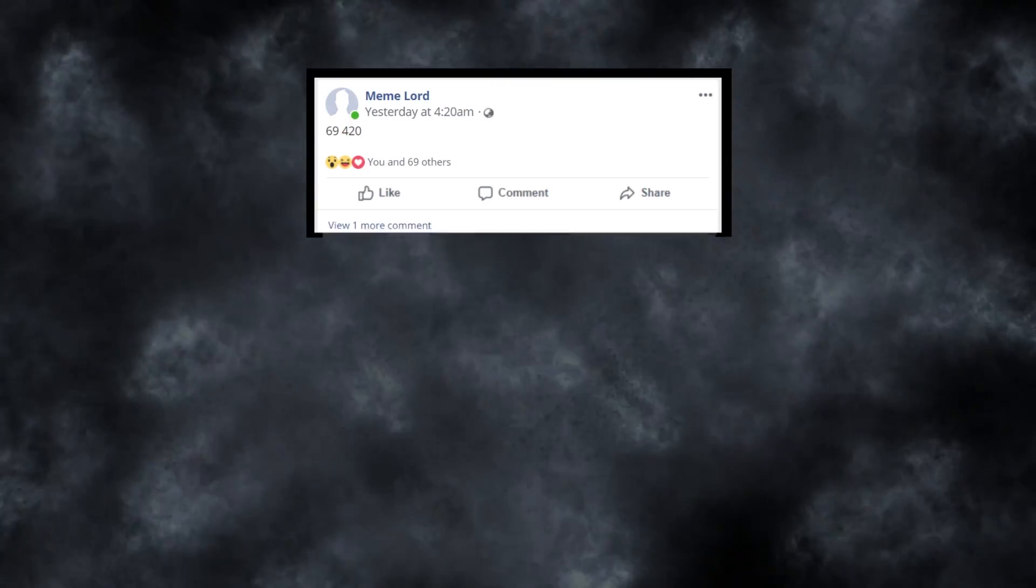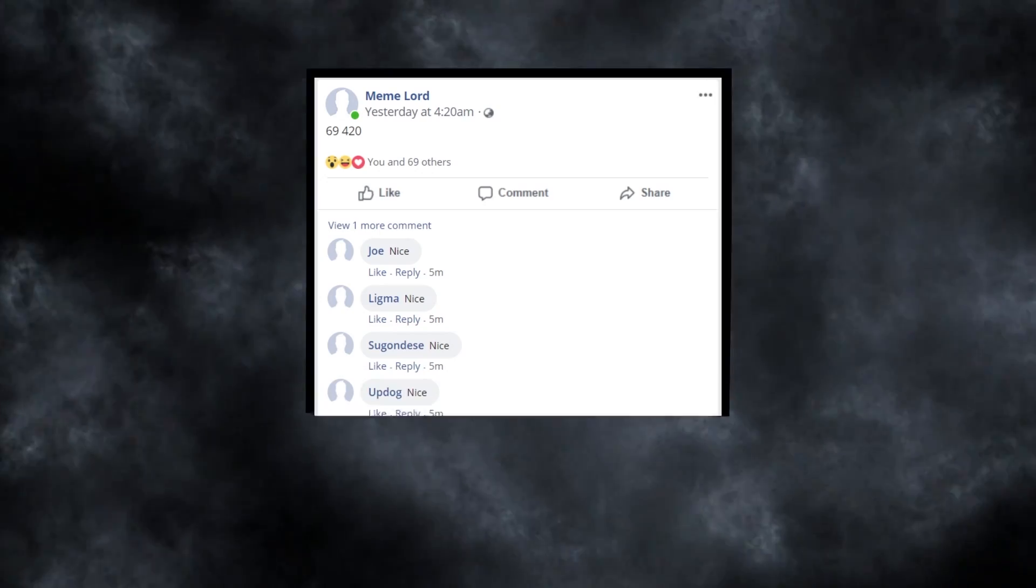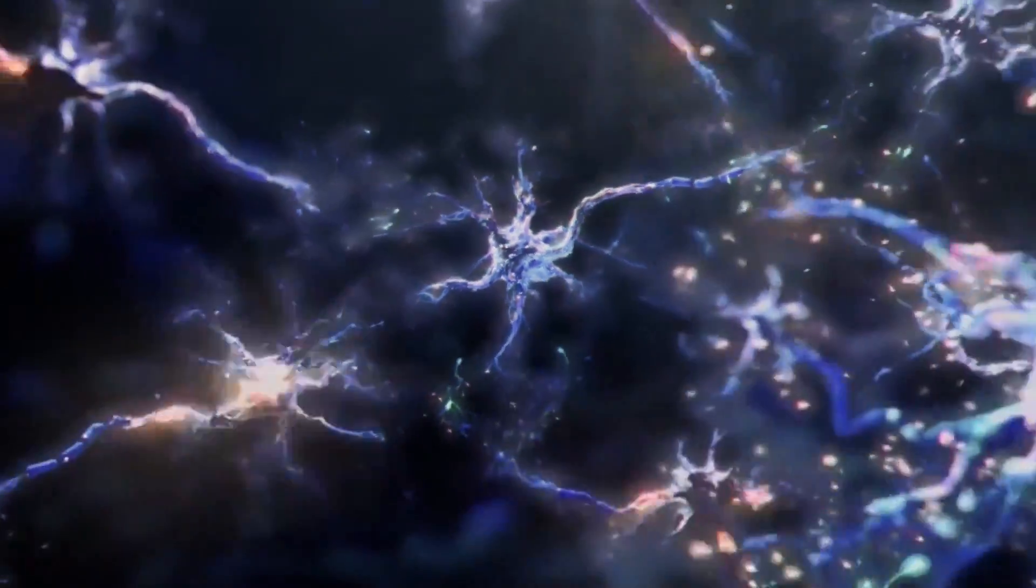Someone writing 69 420 is an input. People commenting nice is an output. Human brain takes in some input in the form of stimuli and gives the response as an output.